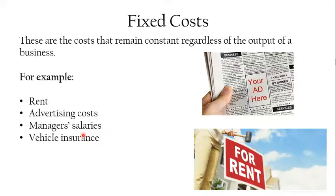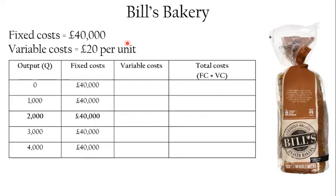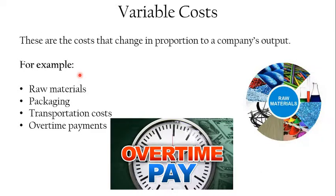Salaries are a fixed payment often paid to managerial staff. Teachers, for example, get salaries — it doesn't matter how many hours they work, they don't get overtime and aren't paid by the hour. Those costs remain constant regardless of output. Looking at Bill's Bakery, their fixed costs are £40,000 and remain the same from zero to 1,000 cakes. Remember: just saying 'fixed costs remain the same' won't get you the marks — you must say they remain the same regardless of a business's output.